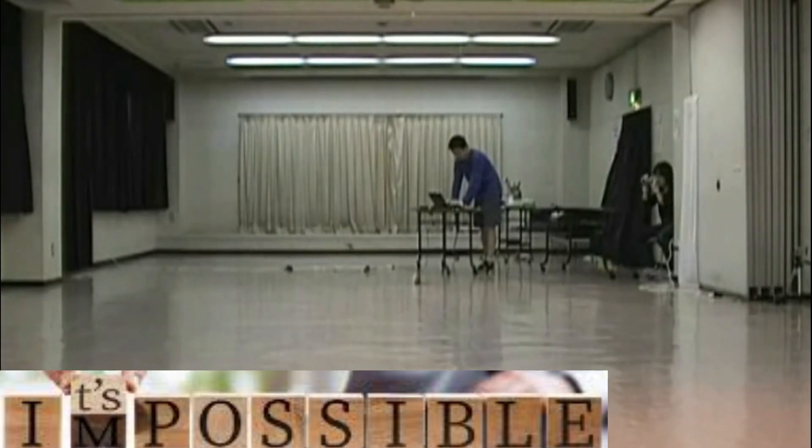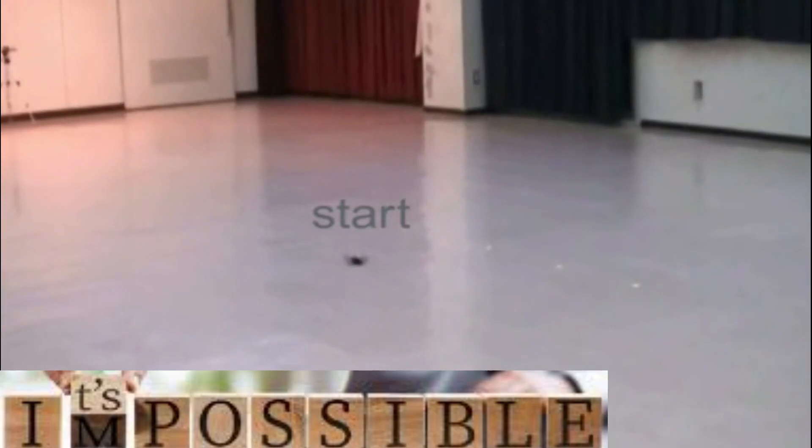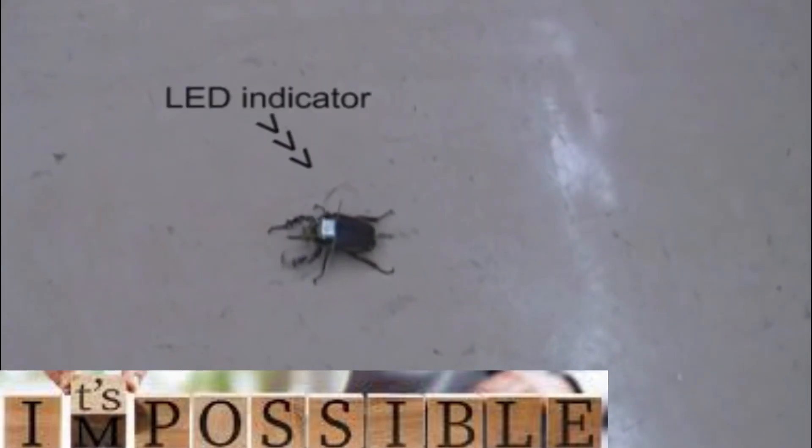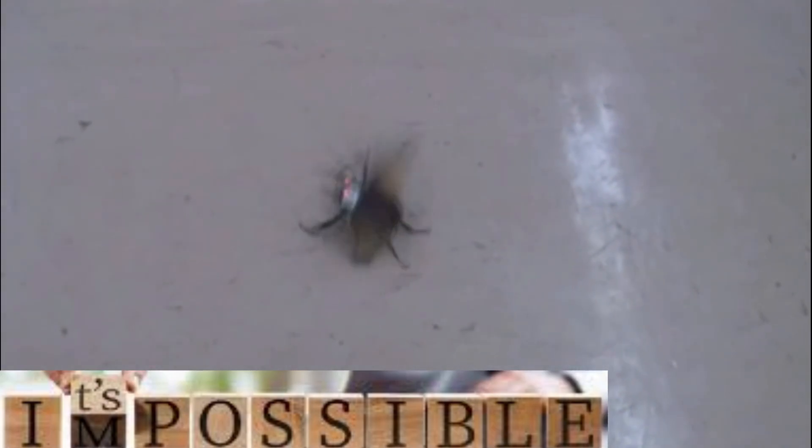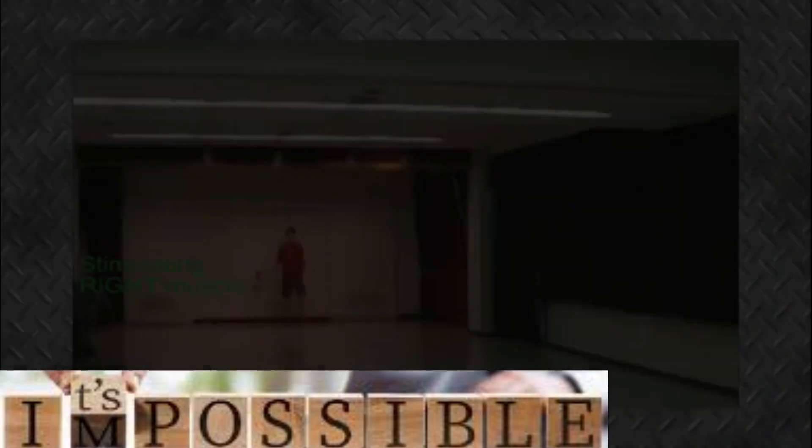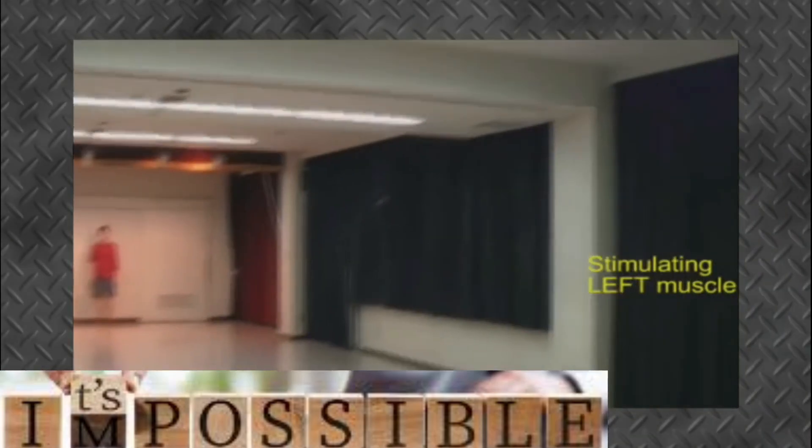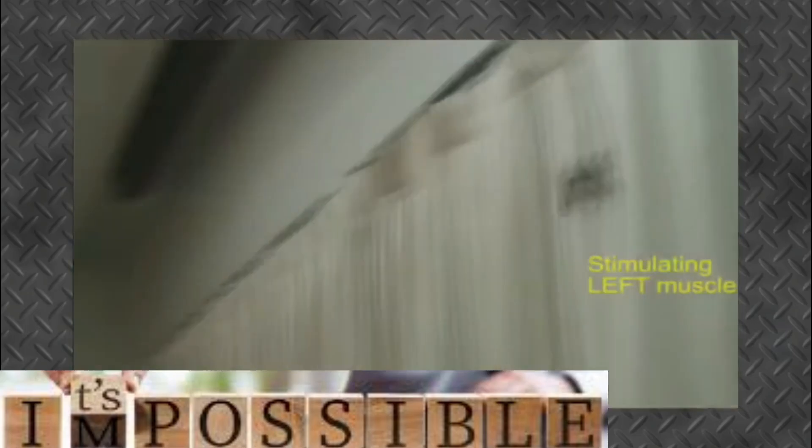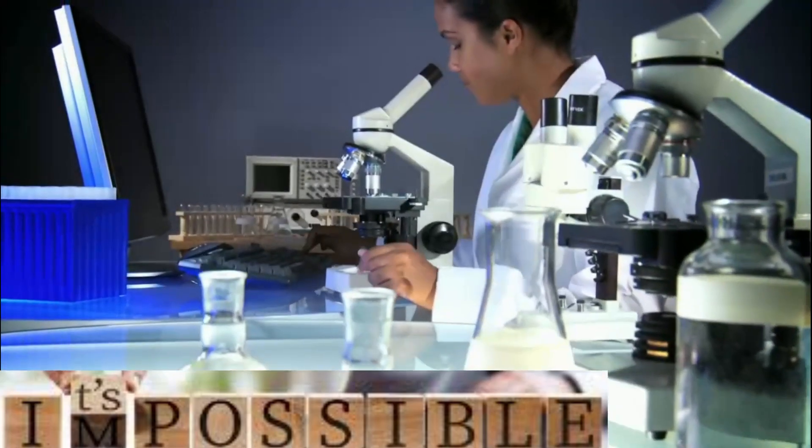At DARPA, scientists have been experimenting with electronically modifying beetles so they can actually manipulate their flight, threading thin wires into the base of the beetle's optic lobes. They can control the region of the brain that makes the beetle start and stop flying. With another pair of wires in the wing muscles, they can also make the beetle veer to the right or to the left by remote control.